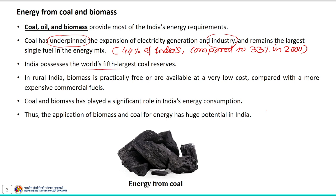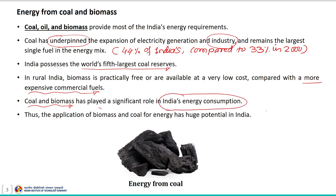India possesses the world's fifth largest coal reserve. After coal, conventional biomass — predominantly firewood, charcoal, and animal waste — are rural India's primary energy source, because in rural India biomass is practically free or available at very low cost compared to more expensive commercial fuels. Coal and biomass have played a significant role in India's energy consumption and have a huge potential in India.